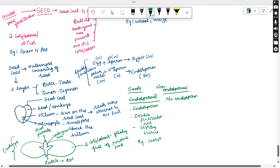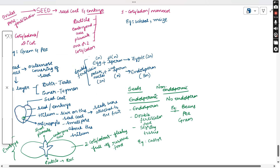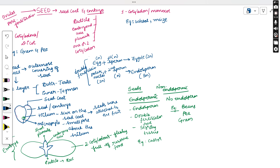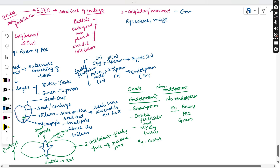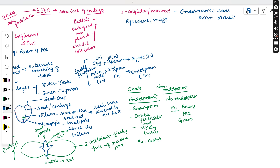Non-endospermic seeds cannot store food material; examples include beans, garden pea, and gram. This concludes the dicot seed. For monocots, the seed contains a single cotyledon. Generally, all monocots are endospermic in nature, meaning the endosperm is formed and stores food — except orchids, which also belong to monocots but do not contain endosperm.